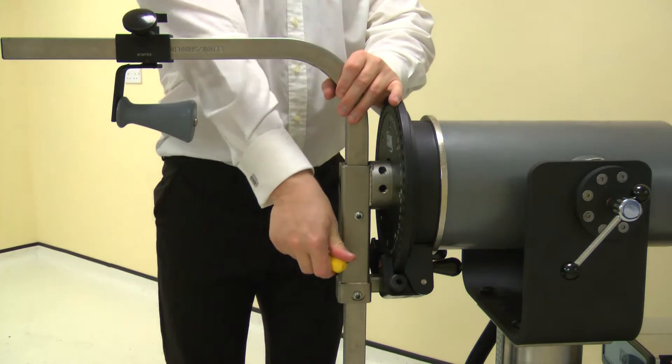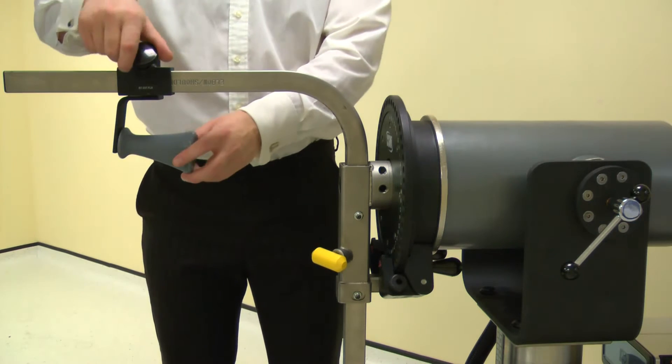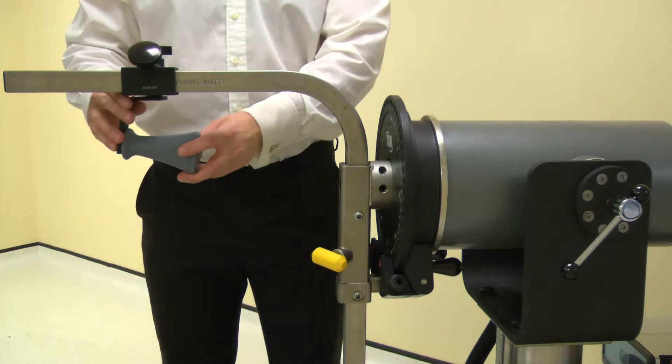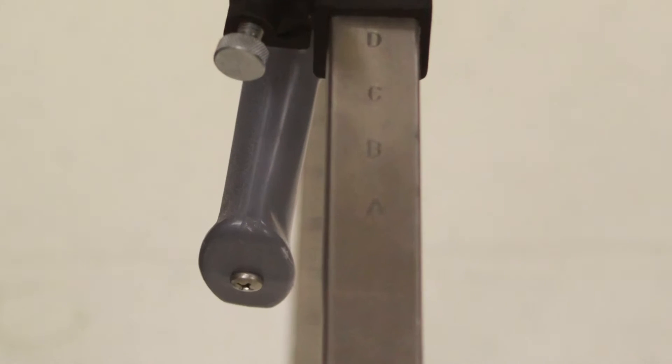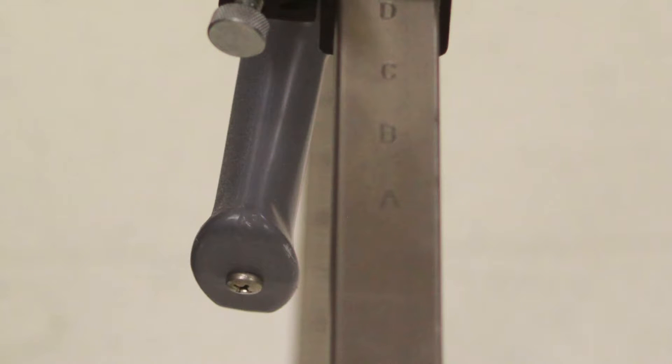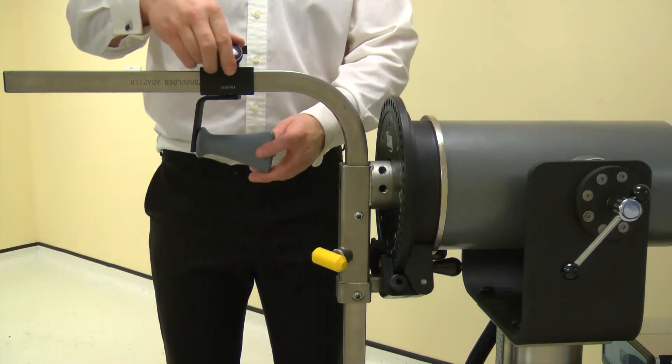Now position the hand grip. Loosen the screw and slide to the correct position. Move the handle to position A. Note well: this position may need to be altered to suit the subject. Secure using the screw.